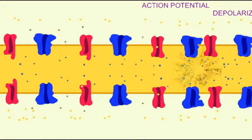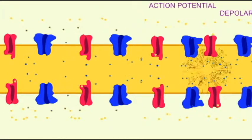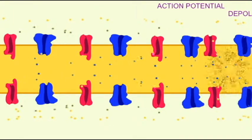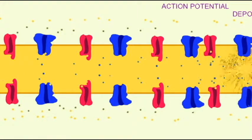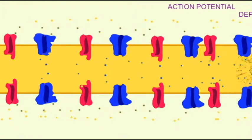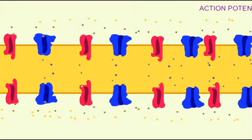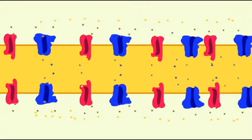The action potential is a wave of depolarization which spreads along an axon. As voltage-regulated gates in one section open, this causes the depolarization in the subsequent section, allowing the action potential to continue.